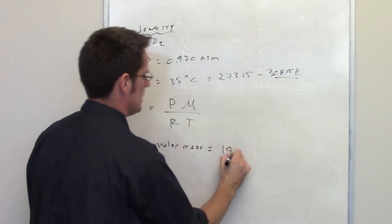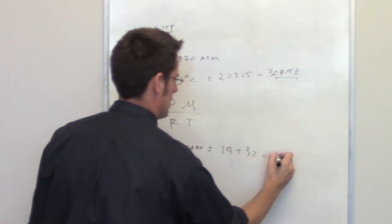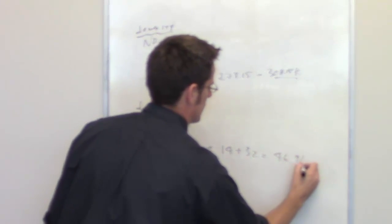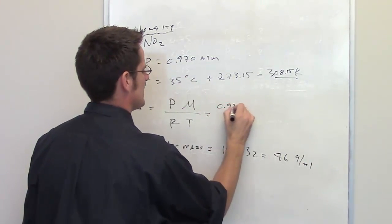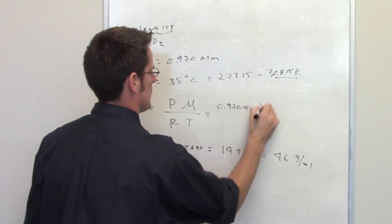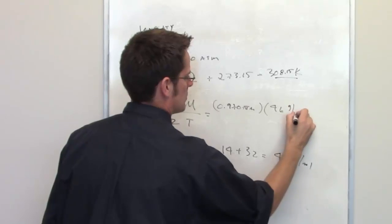Nitrogen weighs 14. Each oxygen weighs 16, so that's 32. I add those together, I end up getting 46 grams per mole. So if we throw this all in here, we've got all of our numbers. The pressure is 0.970 atmospheres. Our molar mass is once again 46 grams per mole.